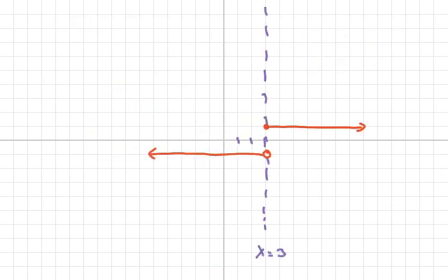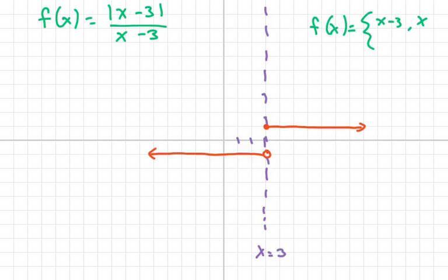Okay, the next one is the same thing. This one is f of x equals absolute value of x minus 3 over x minus 3. So if I write this as a piecewise defined function, we're going to get x minus 3 if x is greater than or equal to 3, and negative x minus 3 over x minus 3 if x is less than 3.